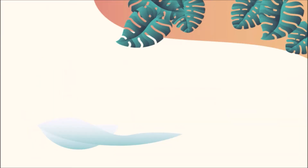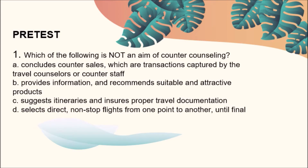Make sure that you have your paper and pen for the pre-test. Number one: Which of the following is not an aim of counter counseling? Letter A, concludes counter sales which are transactions captured by the travel counselors or counter staff; Letter B, provides information and recommends suitable and attractive products; Letter C, suggests itineraries and ensures proper travel documentation; Letter D, selects direct non-stop flights from one point to another until final. The answer is Letter D, selects direct non-stop flights from one point to another until final.